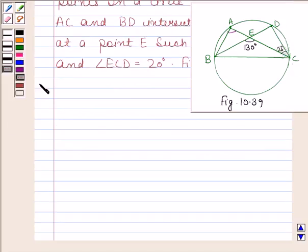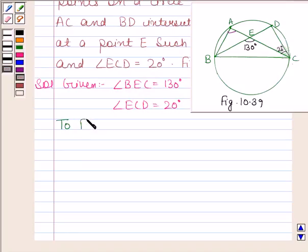Let us now begin with the solution. In the question, we are given that angle BEC is equal to 130 degrees and angle ECD is equal to 20 degrees. We have to find angle BAC.